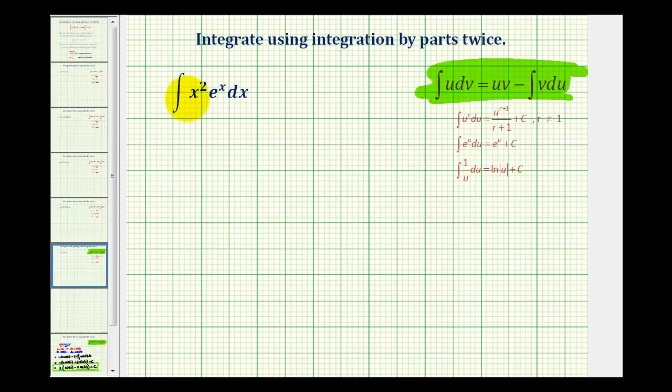If we let u equal x squared, then differential u would be 2x dx, and 2x is considered simpler than x squared. Notice if we selected u equals e to the x, du would be e to the x dx, so it would be the exact same function, not any simpler.